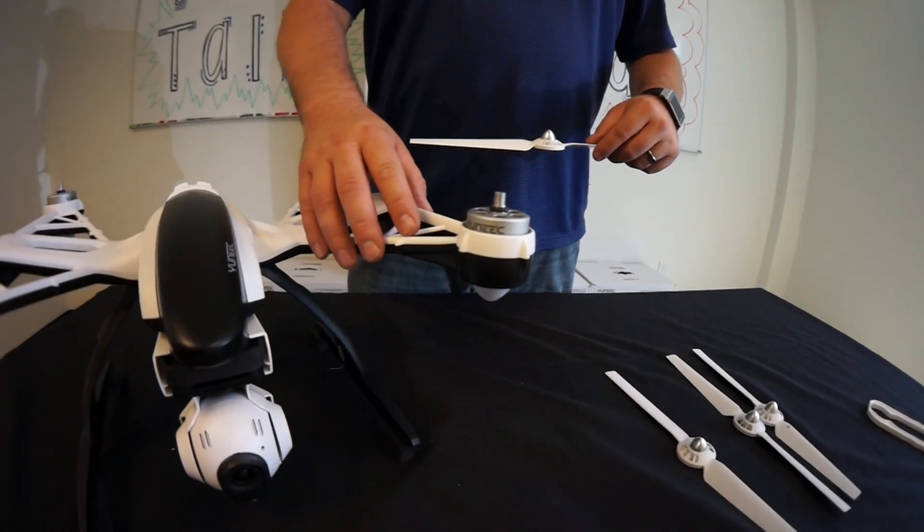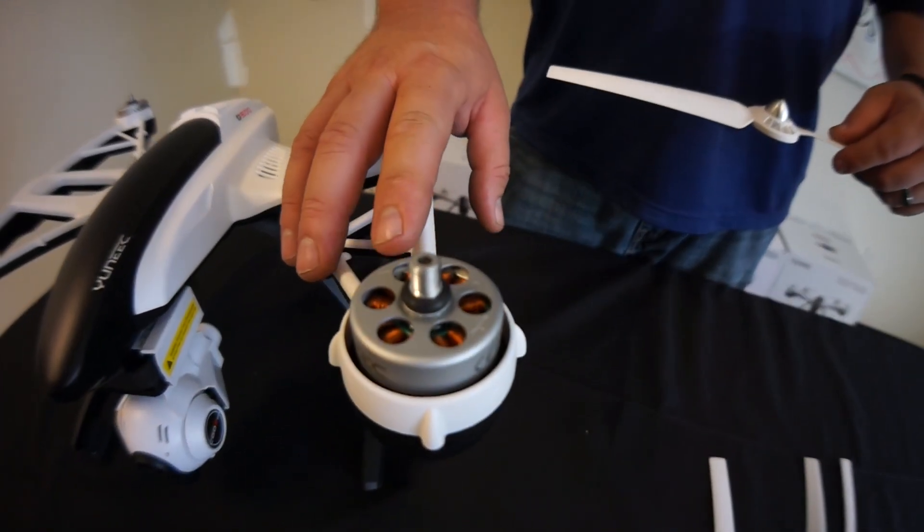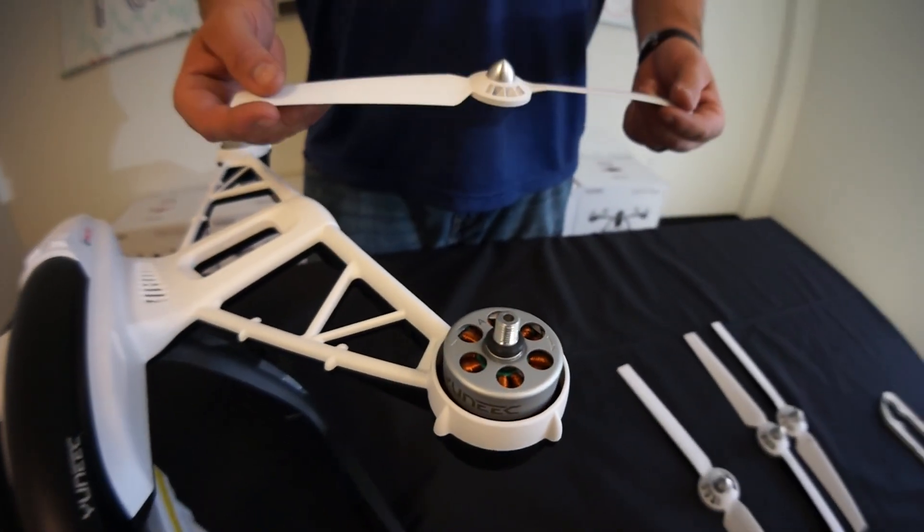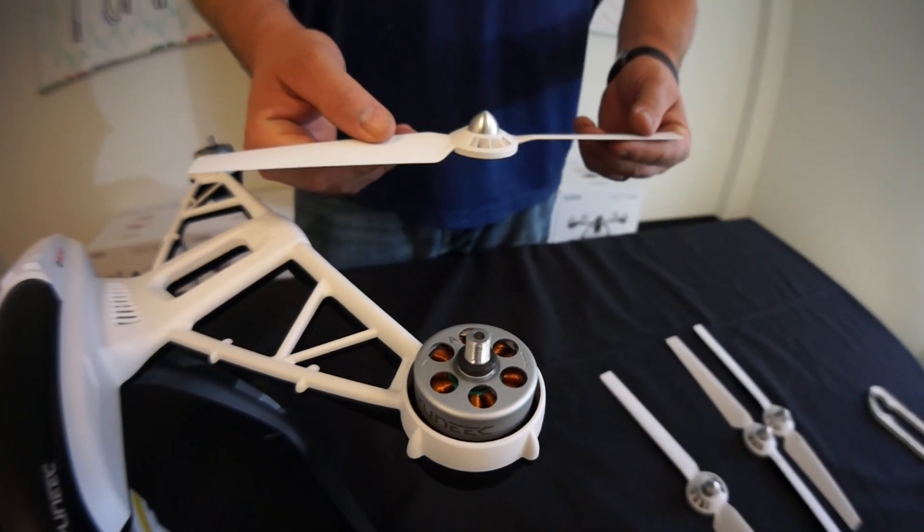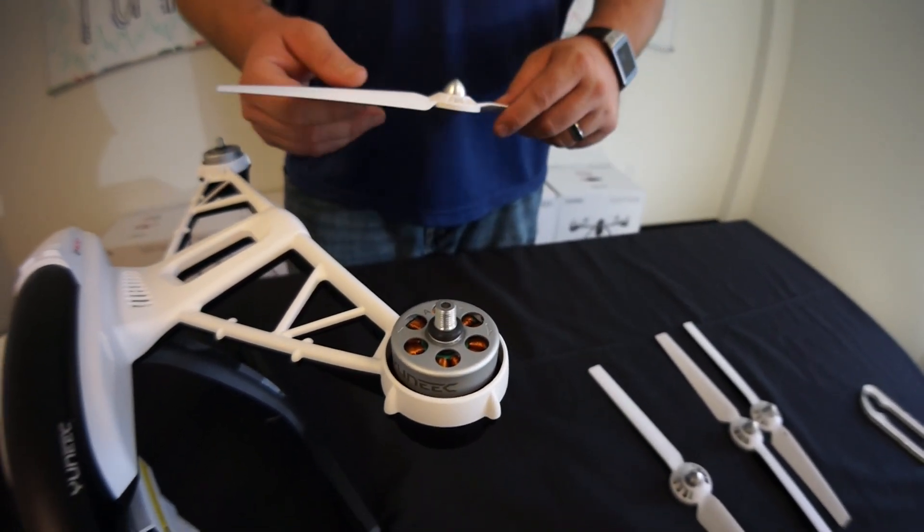So you notice that each motor has a letter designation. This one being A, you want to find a prop that begins with A. So go ahead and find that prop and get it ready to go.